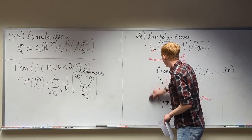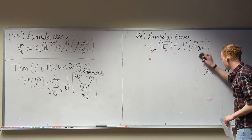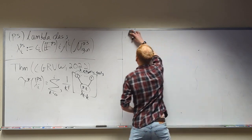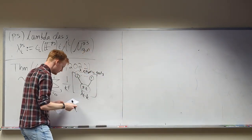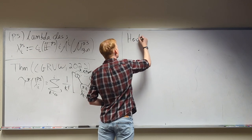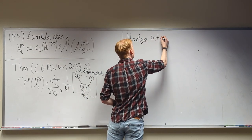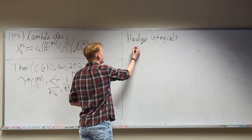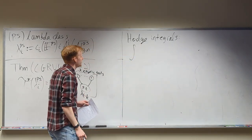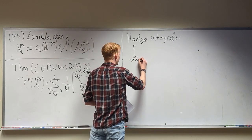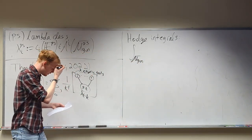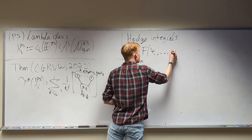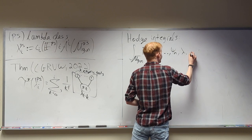Now that we've introduced the main players — psi classes, lambda classes, and their pseudo-stable counterparts — let's talk about what a Hodge integral is. A Hodge integral is an integral over the moduli space of curves of a polynomial of psi classes and lambda classes. A polynomial of these might look like psi_1 · psi_2 + psi_1^2 + psi_1 · lambda_1 + lambda_2 — a sum of a bunch of psi classes and lambda classes.